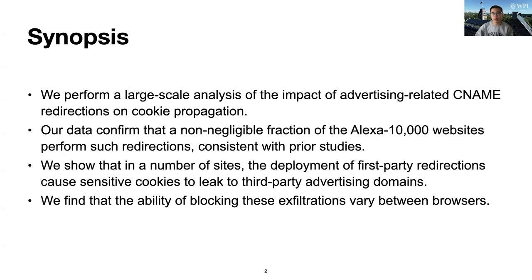In this paper, we perform a large-scale analysis of the impact of advertising-related synonym redirections on cookie propagation. Our data confirmed that a non-negligible fraction of the Alexa 10,000 websites performed such redirections, consistent with prior studies. We showed that in a number of sites, the deployment of first-party redirections caused sensitive cookies to leak to third-party advertising domains. We also found that the ability of blocking these exfiltrations varies between browsers.